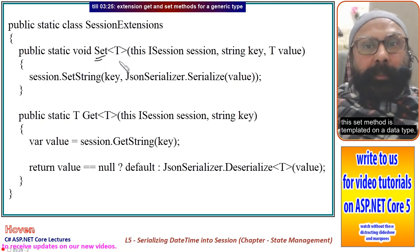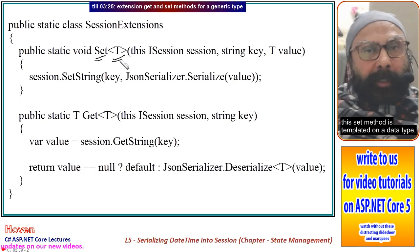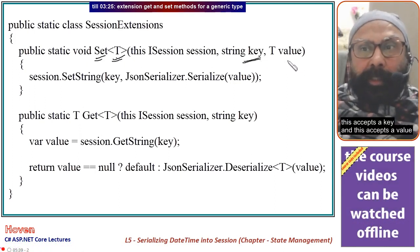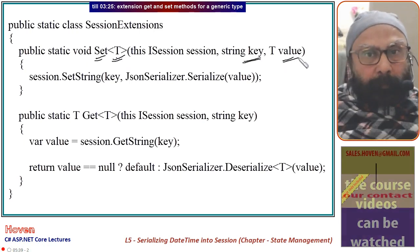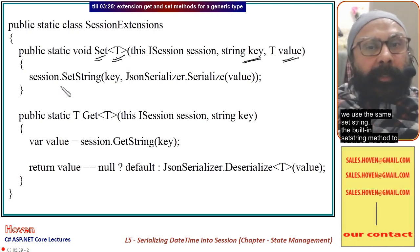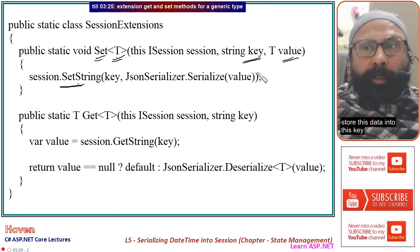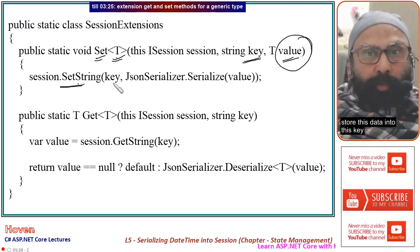This set method is templated on a data type, any generic data type, and this accepts a key and this accepts a value. We use the same SetString, the built-in SetString method, to store this data into this key.